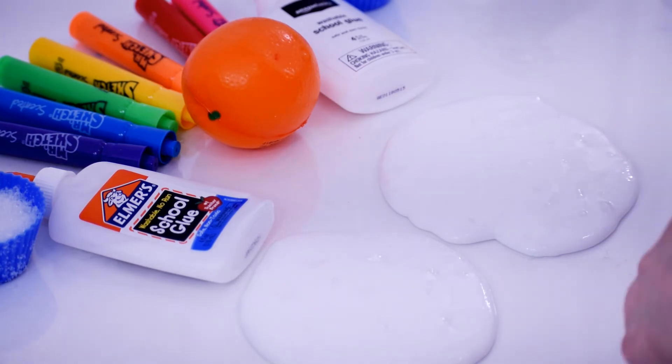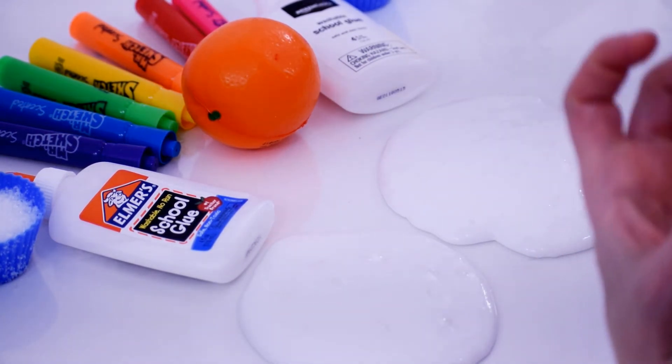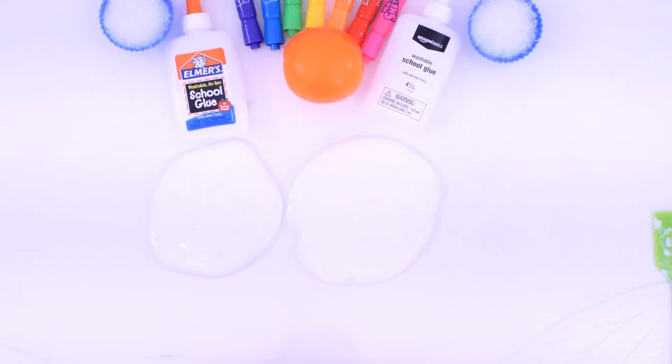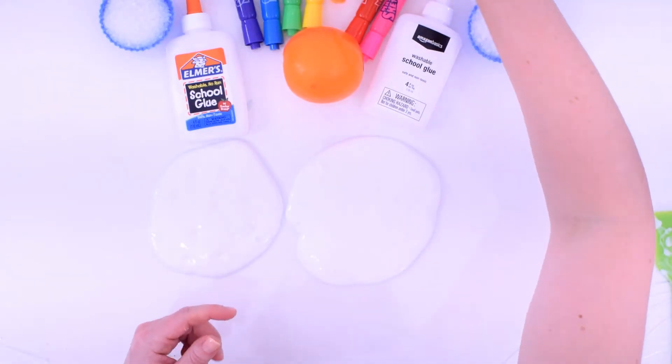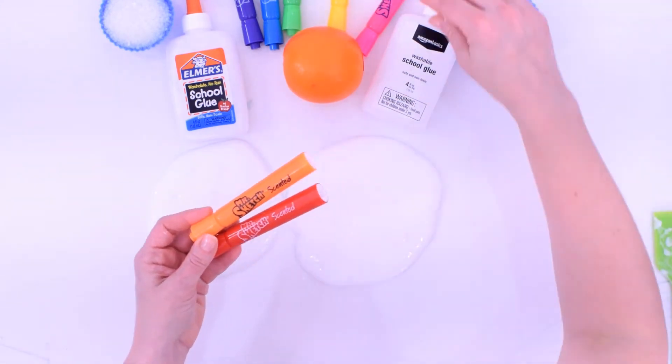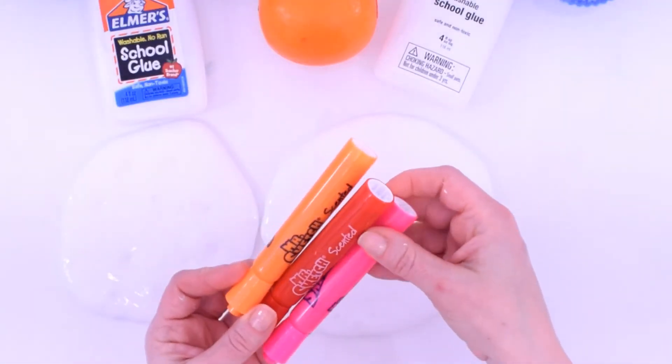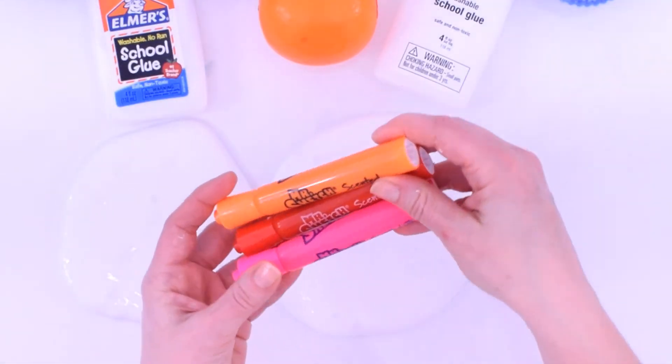One of my favorite ways to color the slime is to use markers because it's less messy. You don't get color all over your hands. I have these markers that are scented. So I have orange, red, pink, and they all are scented fairly close to what you would expect.